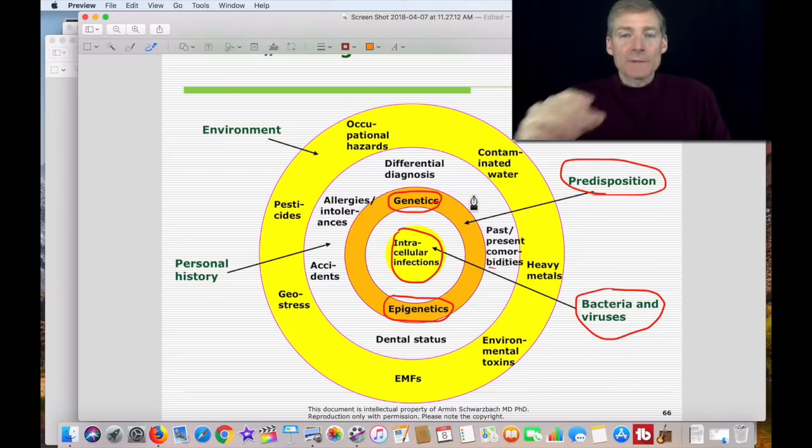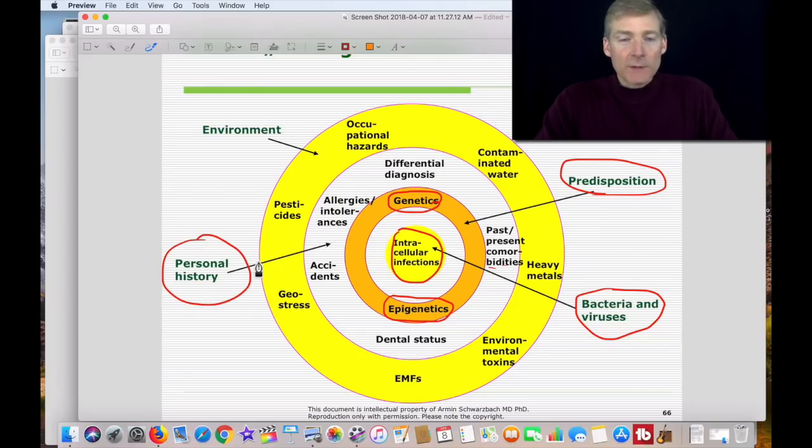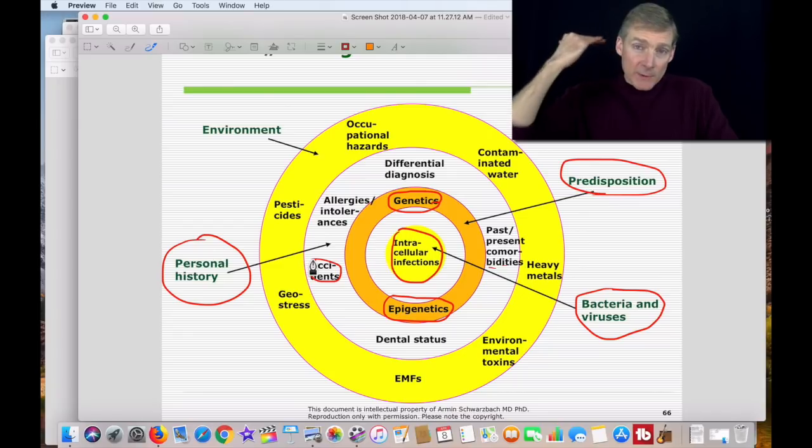The next layer outside this onion is personal history. So that could include an accident. Maybe you had whiplash from a car accident and it messed up your nervous system and that can affect your whole body.